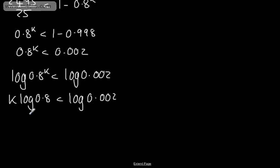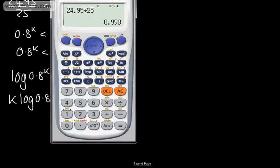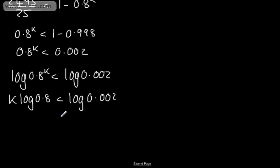I'm now going to divide both sides by log of 0.8. Log of 0.8 is a negative number. If we're dividing an inequality by a negative number, and you might want to make reference to that, we're going to have k is greater than log of 0.002 over log of 0.8.